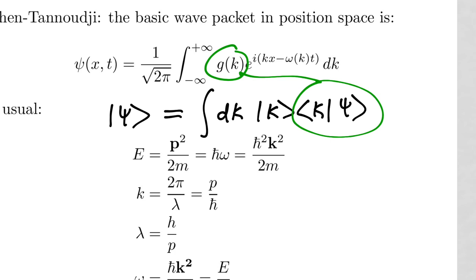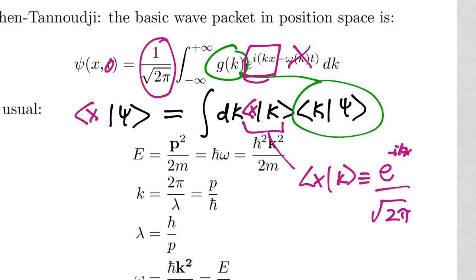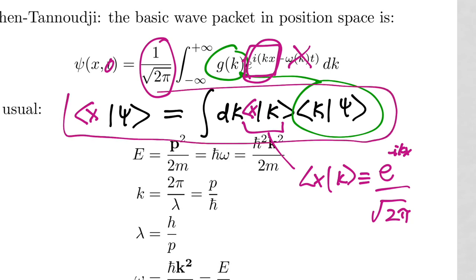We have a plane wave state here. Setting t = 0 for a moment, the plane wave is the wave function of a momentum eigenstate: ⟨x|k⟩ = e^{ikx} / √(2π). To get to wave function formalism, we multiply on both sides by ⟨x|. That accounts for the √(2π) and the e^{ikx}. This is how you go from the Dirac formalism to the wave function formalism — I recommend doing this to stay sharp on Dirac notation.